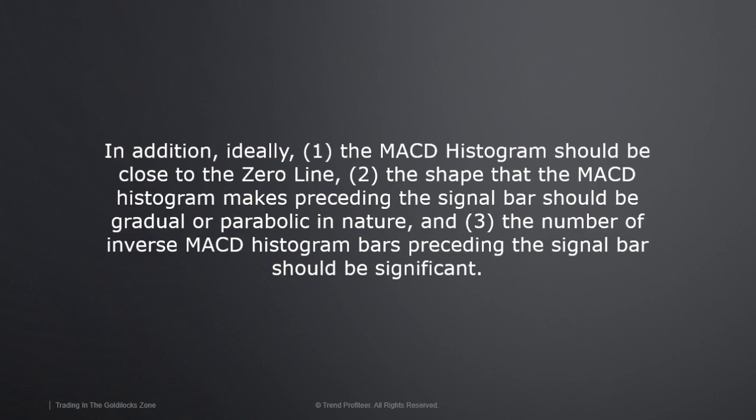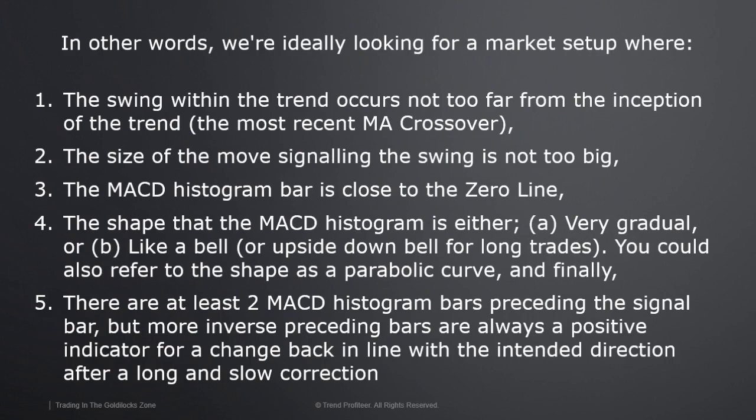Naturally, the further away the swing-within-trend setup is from the inception of the trend — the MA crossover — the more likely that the trend is about to end. The too-far amount should be based on the average trend move of the pair on the chosen timeframe. In addition, ideally: one, the MACD histogram should be close to the zero line; two, the shape that the MACD histogram makes preceding the signal bar should be gradual or parabolic in nature; and three, the number of inverse MACD histogram bars preceding the signal bar should be significant.